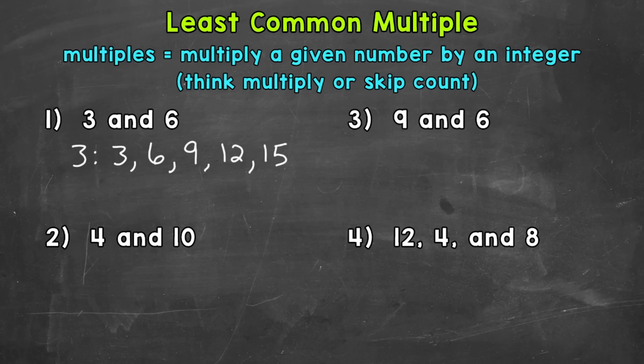Now those multiples go on forever. So I suggest writing four or five multiples for each given number, see if you have any in common, and then go from there. You can always extend your lists of multiples.